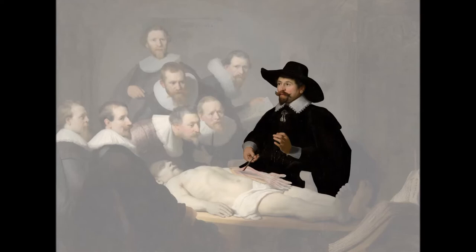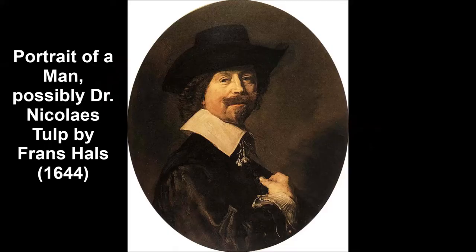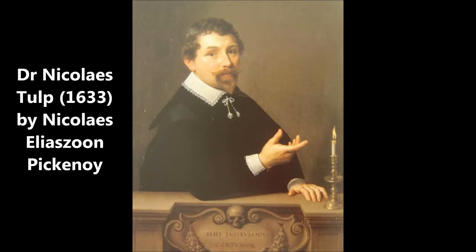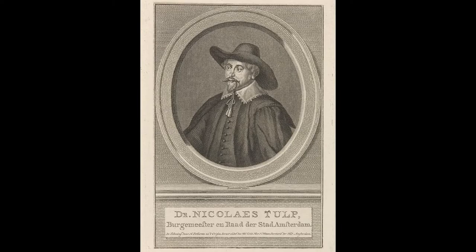Now that we understand some of the background, we can focus on the lecturer, the 38-year-old Dr. Nikolaus Tulp. This was not how his parents had called him. Back in that day, people could change their name relatively easily. He was born as Klaas Peterson. After his studies, he changed his name to Nikolaus Pietersz, which was a more credible name for a physician and surgeon. But after he established a successful practice in Amsterdam, he changed his name again, this time to Nikolaus Tulp, inspired by the beautiful tulips he saw near his house.